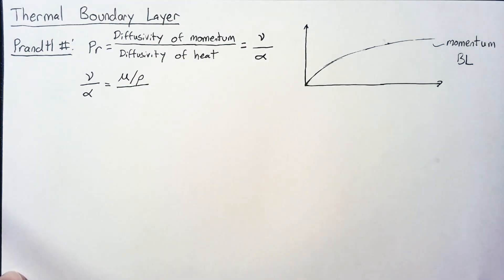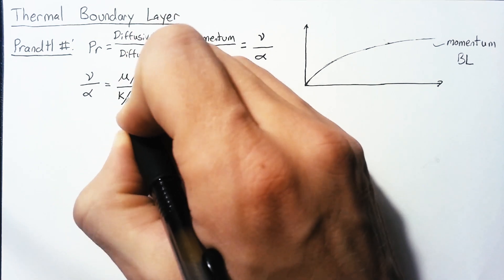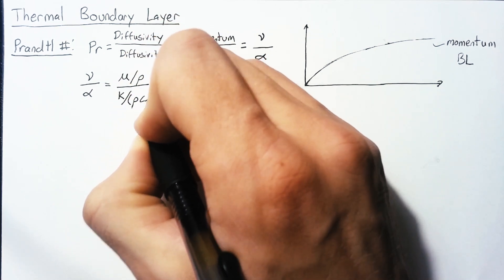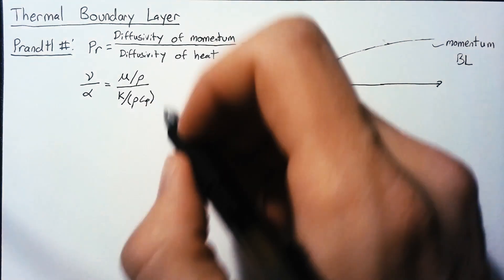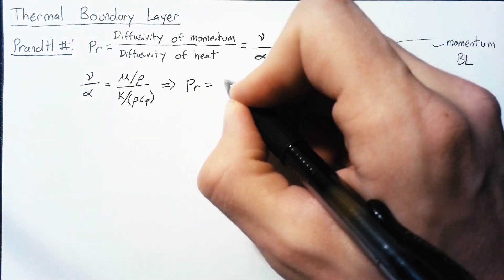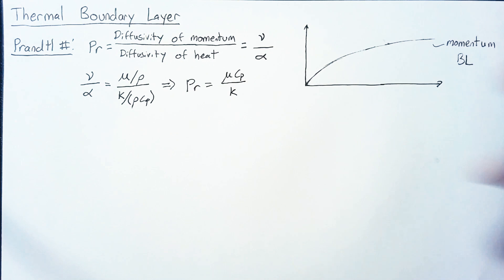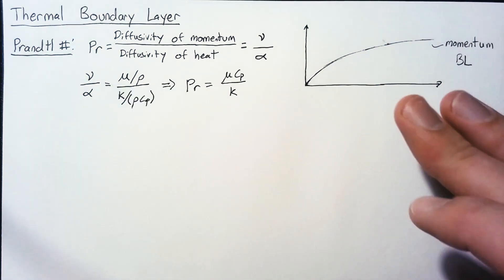Alpha, we know from previous videos, is just our thermal conductivity k divided by rho times Cp, where Cp is the specific heat. We can rearrange this and get that the Prandtl number can also be written as mu times Cp over k. The Prandtl number won't affect the shape of the boundary layer, but it will affect how it scales.